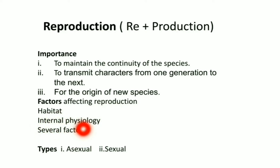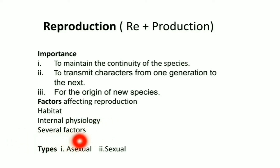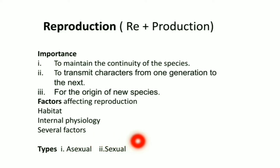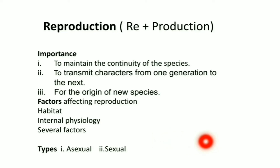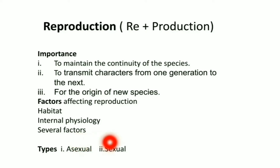Next, internal physiology. Organisms with perfect physiology can perform better reproduction. Several factors include environmental conditions such as temperature, availability of oxygen, high carbon dioxide, water, etc. It also includes genetic makeup.